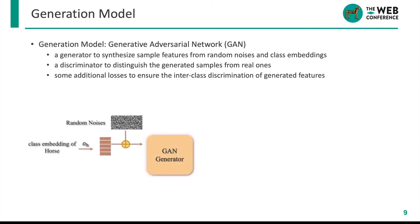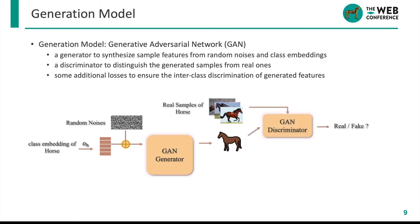We adopt GAN as the generation model. Taking animal classification as an example, we input the class embedding of horse along with some random noise into the GAN, and the generator synthesizes fake samples. After adversarial training between the fake samples and real horse samples via a discriminator, the generator can synthesize samples that fit the real feature distribution of horse.